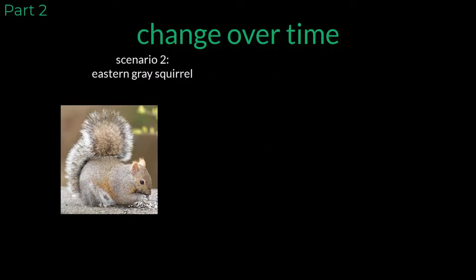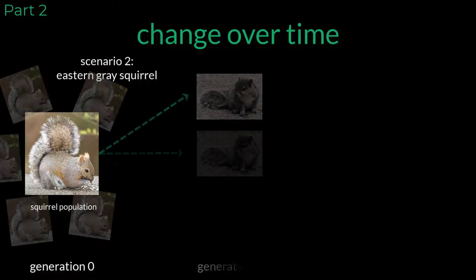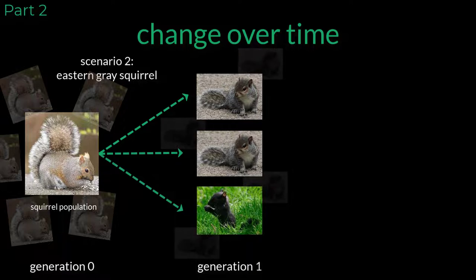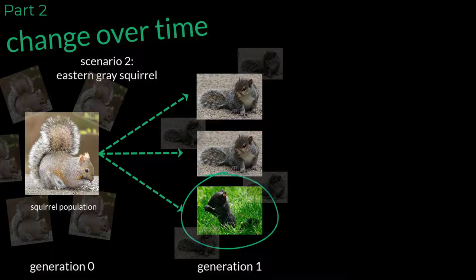While there is some variation in the fur color of these squirrels, most of them near the Chicagoland area where I live are gray. Let's say that our first squirrel population has natural gray fur. These squirrels live their lives and find mates to create offspring. The gray fur color is passed to most of the offspring, but due to some randomness, there is one individual in the next generation that has a darker, black fur color.